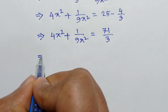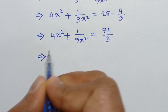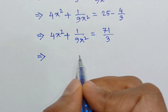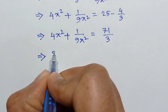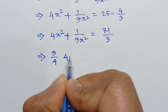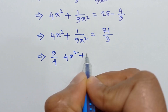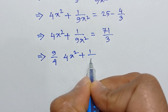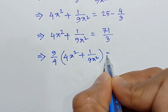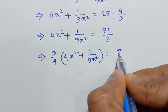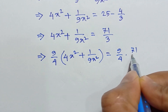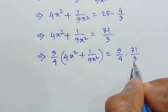Now, if we multiply both sides by 9 over 4, we will have 9 over 4 times 4x squared plus 1 over 9x squared, is equal to 9 over 4 times 71 over 3.